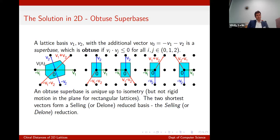The solution, discussed initially by Selling and then elucidated by Conway and Sloane — which is foundational to a lot of this work — is to use something called the obtuse superbase. A superbase is simple: it adds an extra vector, which is the negative sum of your chosen basis, and you demand that all inner products between the vectors are non-positive, making it an obtuse superbase.